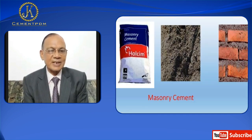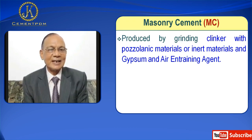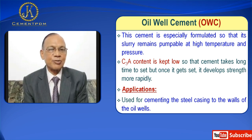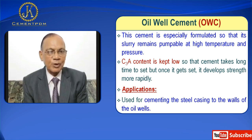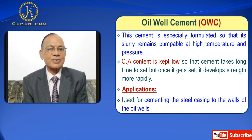Next is Masonry Cement, MC. It is produced by grinding clinker with pozzolanic materials or inert materials, gypsum, and air-entraining agents. It has low compressive strength and is hence used for plastering and brickwork. Next we have Oil Well Cement, OWC. This cement is specially formulated so that its slurry remains pumpable at high temperature and pressure. C3A content is kept low so that the cement takes a long time to set, but once set it develops strength well. Application: used for cementing the steel casing to the walls of oil well bores.